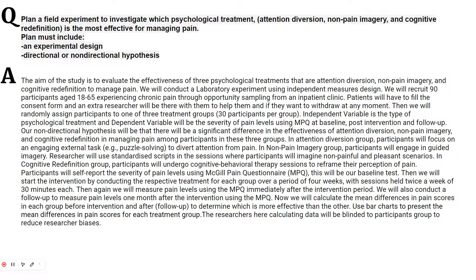The independent variable is the type of psychological treatment — one of those three. The dependent variable will be the severity of pain levels using the McGill Pain Questionnaire at baseline, post-intervention, and follow-up. Our non-directional hypothesis will be that there will be a significant difference in the effectiveness of attention diversion, non-pain imagery, and cognitive redefinition in managing pain among participants in the three groups.